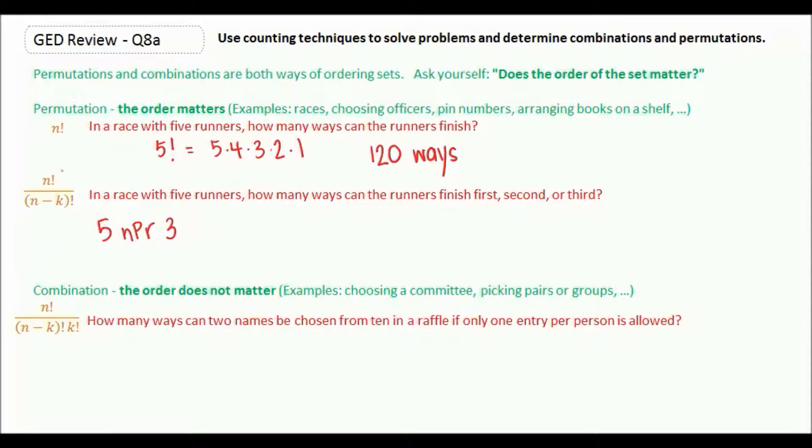We're going to take N factorial, which is how many runners we have, so five runners. And then this N minus K is the number of runners minus the number of people we're actually taking in our set. So it would look like five factorial over five minus three factorial.